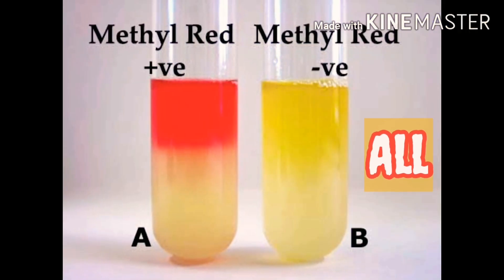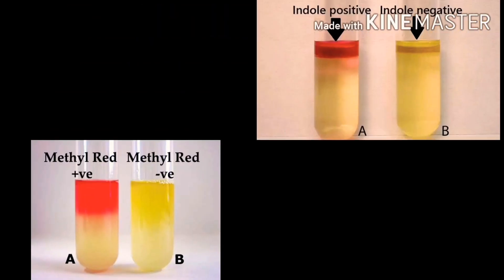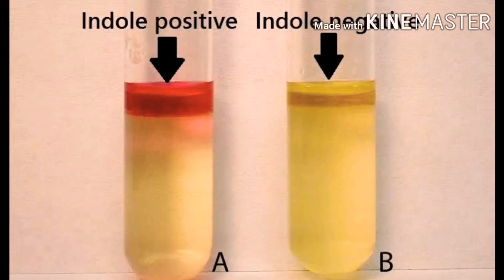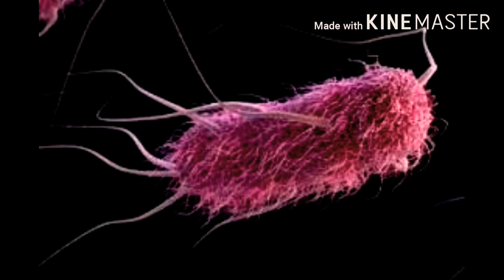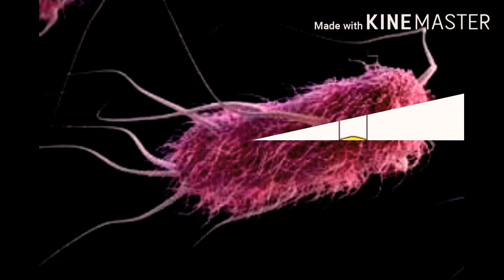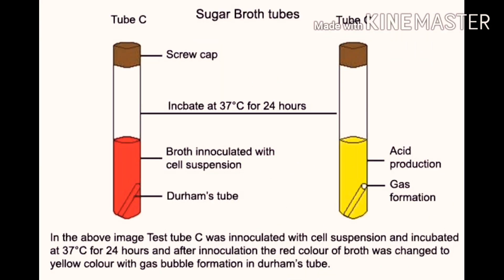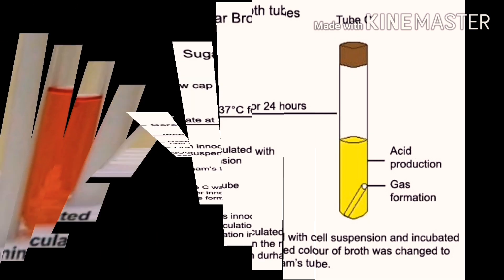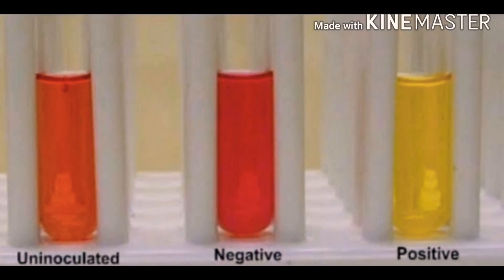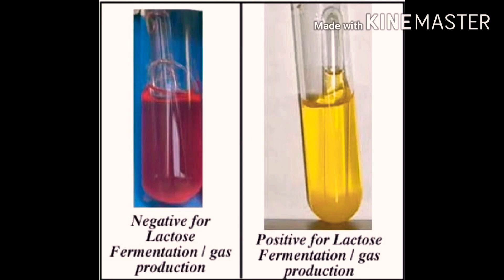All genera of Escherichia are methyl red positive, and many species give an indole positive result. It can grow on simple media containing glucose as a sole carbon source. Lactose fermentation is the main principle in identifying E. coli in all differential media.